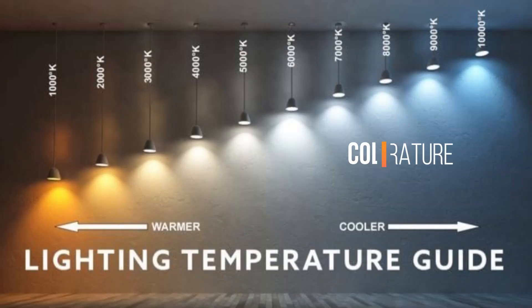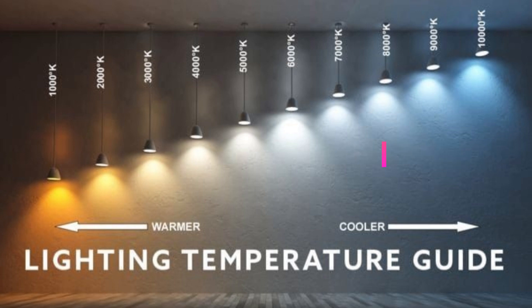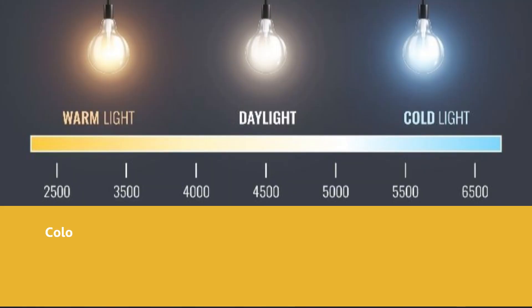Now the next concept is temperature. We perceive this through the color of light. It varies from yellowish to bluish, and we term them as warm white, cool white, and daylight. The color temperature of warm white light varies from 2700 to 3000 Kelvin. Its appearance is yellowish white and creates a warm, cozy, and intimate atmosphere.